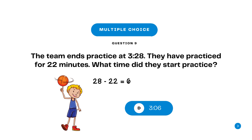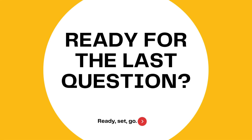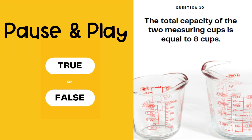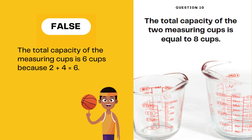The answer is D. 3:06 because 28 minus 22 equals 6. Question 10 is true or false: The total capacity of the two measuring cups is equal to 8 cups. Pause here and press play when you are ready to answer the question. False. The total capacity of the measuring cups is 6 cups because 2 plus 4 equals 6.